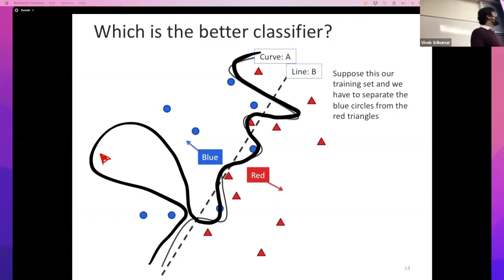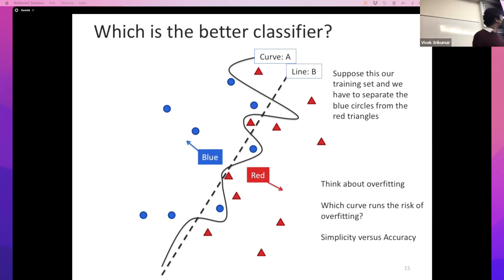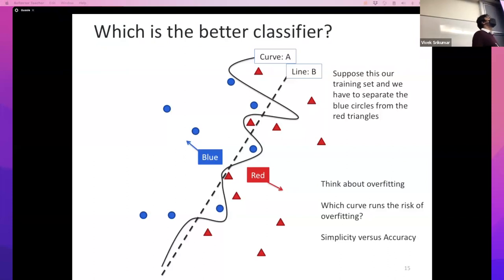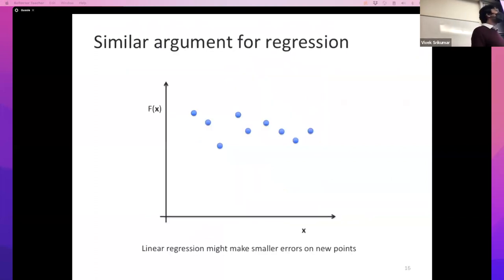The other extreme is a linear classifier - line B - which just separates the data with a line and does not make any commitments about weird angles. The intuition here is to think about overfitting: curve A runs the risk of overfitting, whereas line B runs the opposite risk. The line tends to be more stable, because if you allow your learning algorithm to pick among all possible curves, then the more data you get the more complicated your curves will be and there's no regularity you're trying to get out of the data.